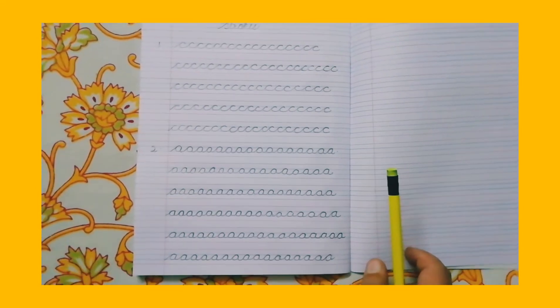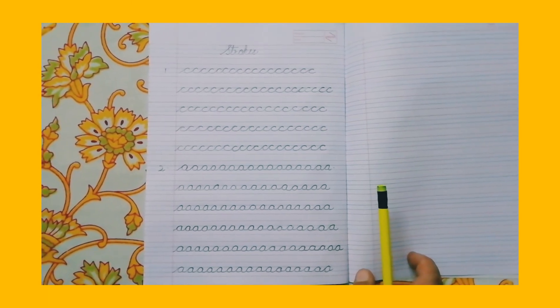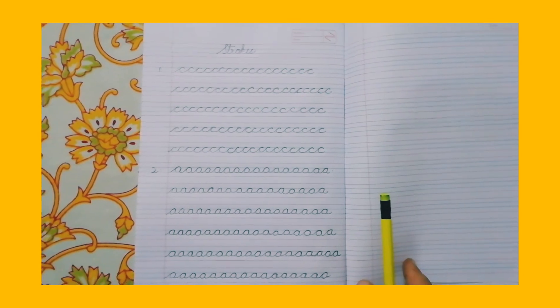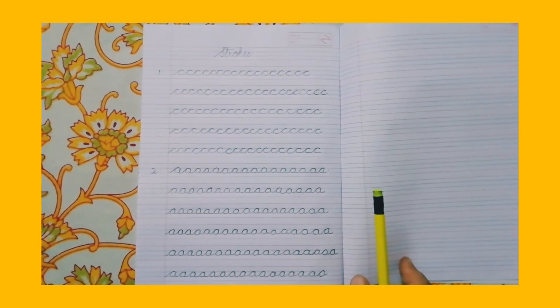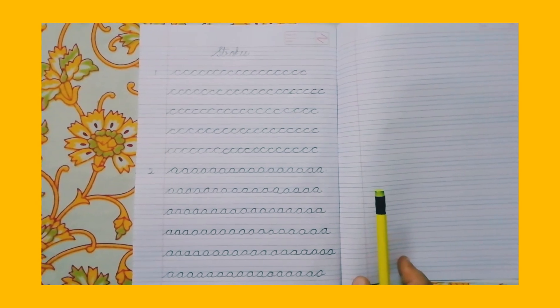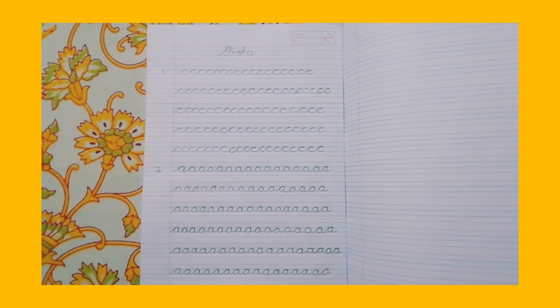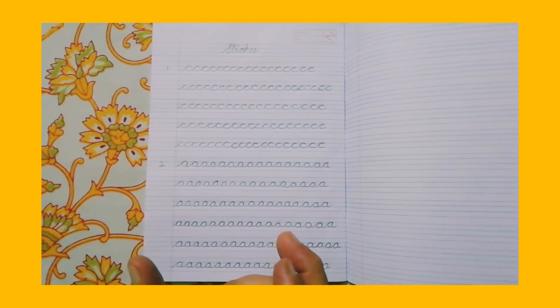So at the end, children, your notebook should look like this. And mothers, please assist your children and supervise them that they should not raise the pencil. The motive of this exercise is to make their wrist stronger so that they can write big words as well.